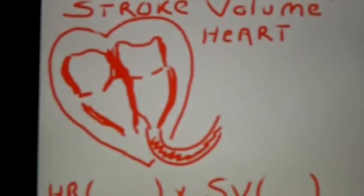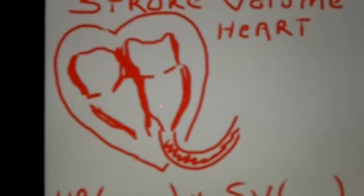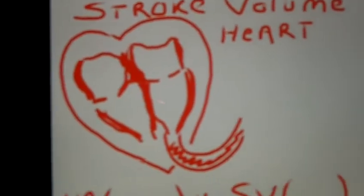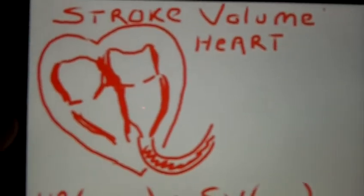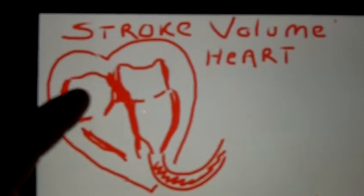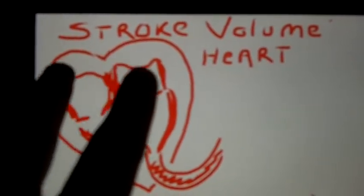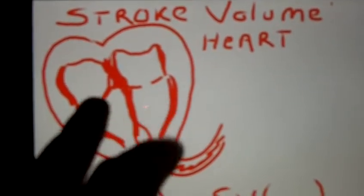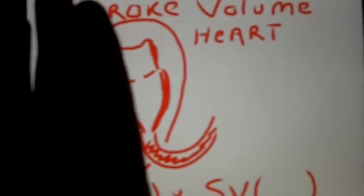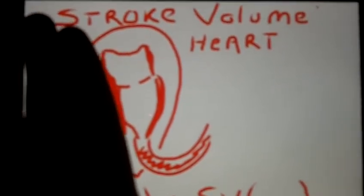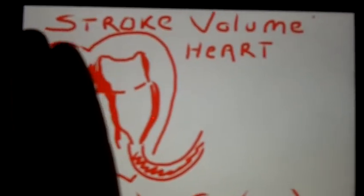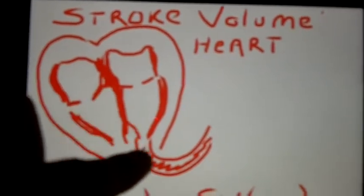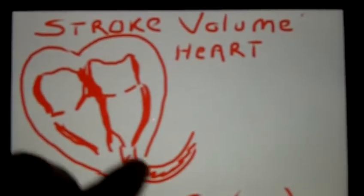Here's a little anatomical drawing of a heart — it's not world-class quality by any means, but it gets the job done. I've depicted the anatomical layout of the heart: up here you have your two atria and two ventricles, right and left. It's actually the left side of the heart that we really want to pay attention to.